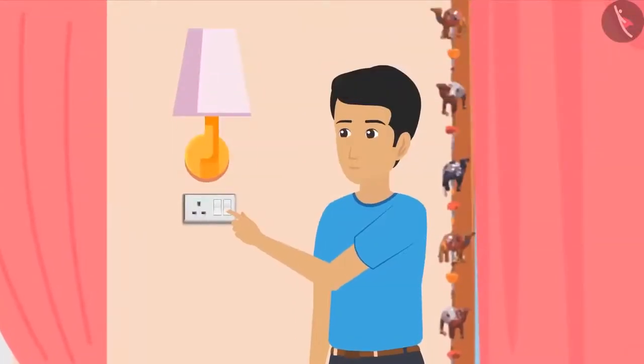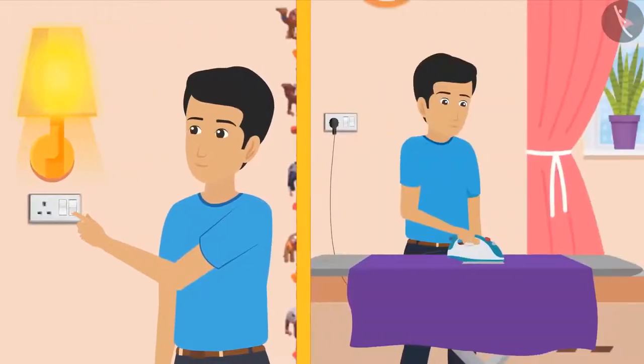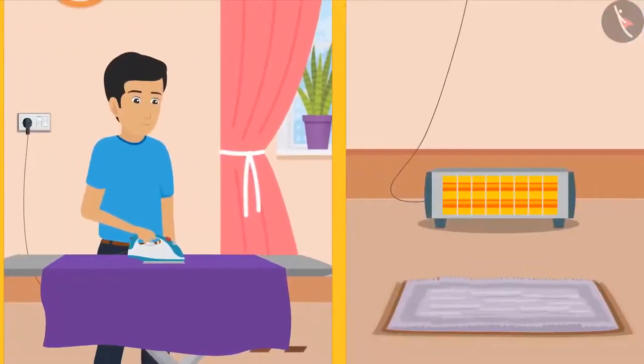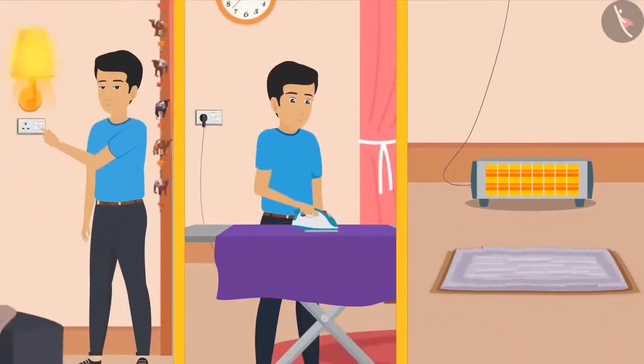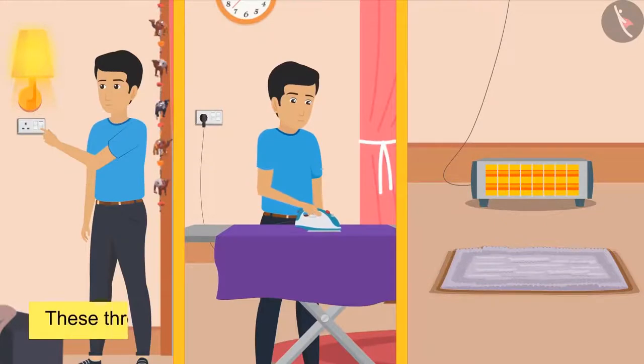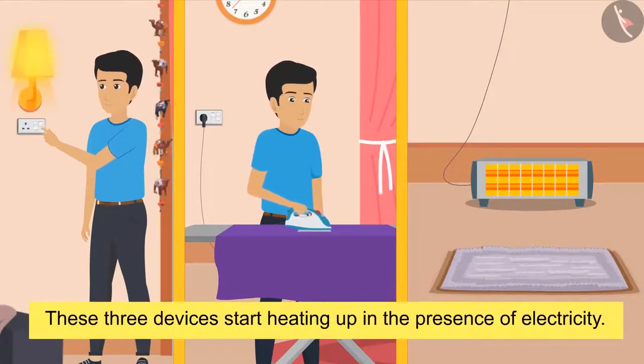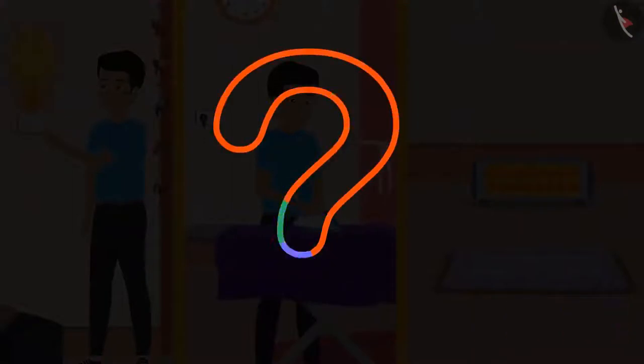We know that bulbs brighten our room, the hot iron is used to iron our clothes, and the heater helps to keep our rooms warm. If you look at all these devices, one thing will be common: they all start heating up in the presence of electricity. So what causes this and how does the appliance heat?